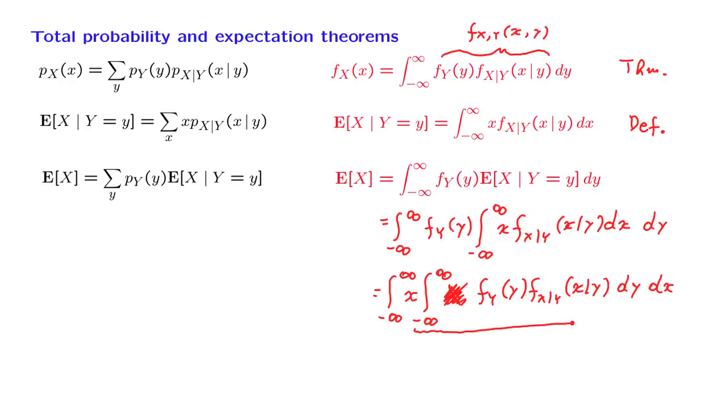This part, by the previous fact, the total probability theorem, is just the density of x. So we're left with the integral of x times the density of x dx. And this is the expected value of x.